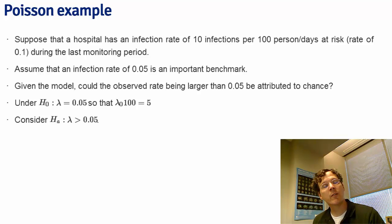Given that we're specifically talking about 100 person days at risk for this particular monitoring period, we could think of this as the null hypothesis is that the rate times 100 is 5 versus the rate times 100 is greater than 5.